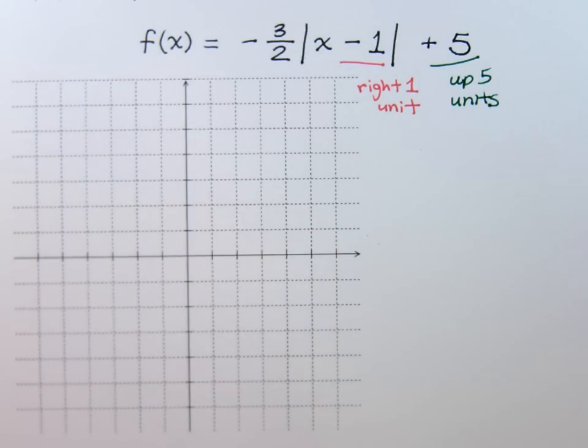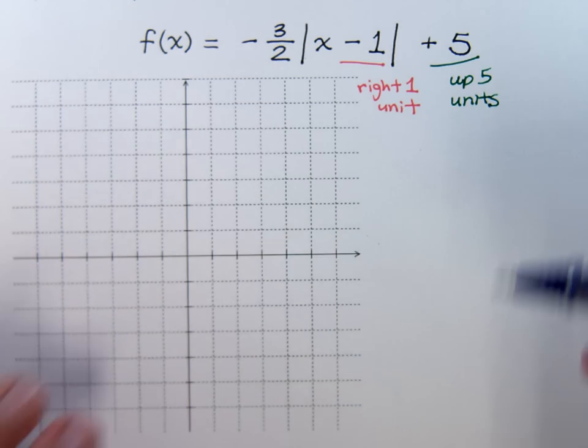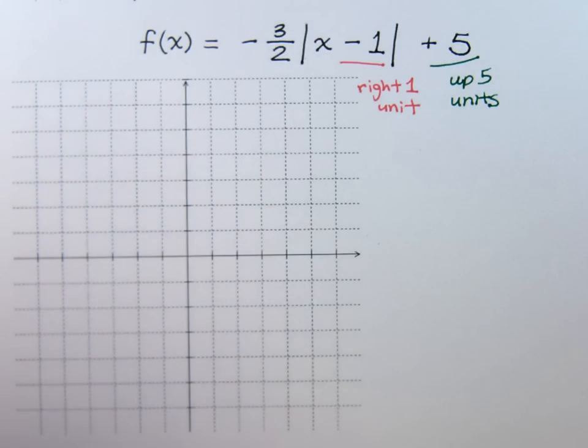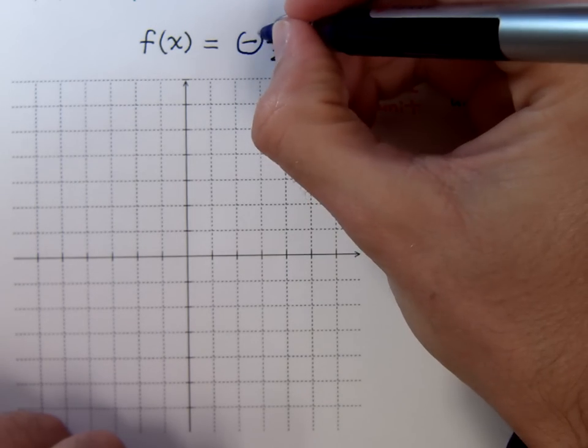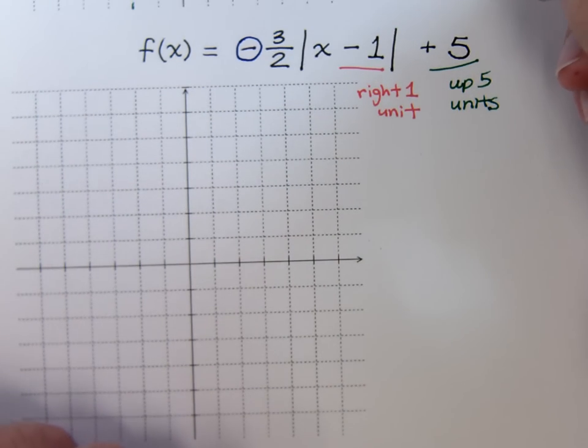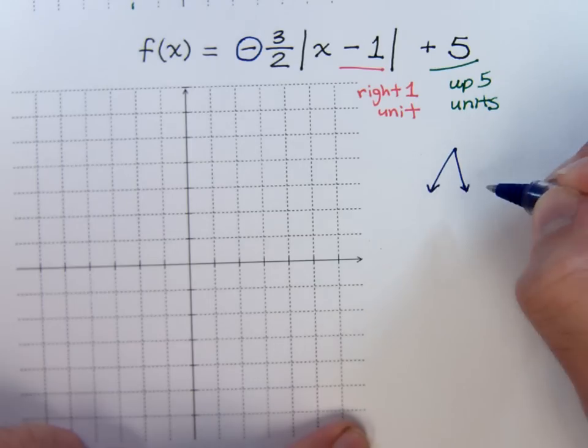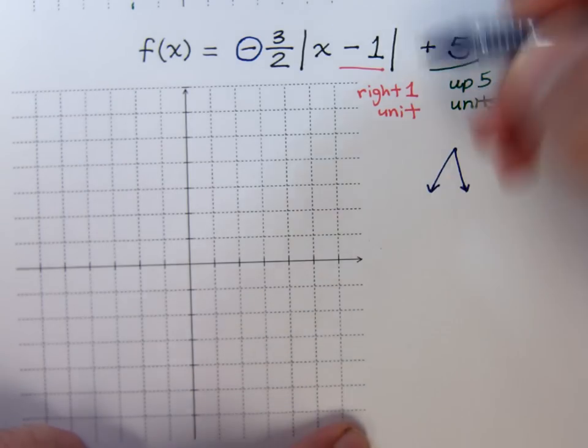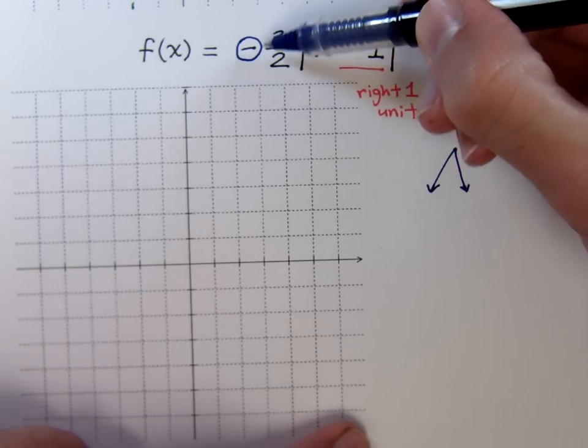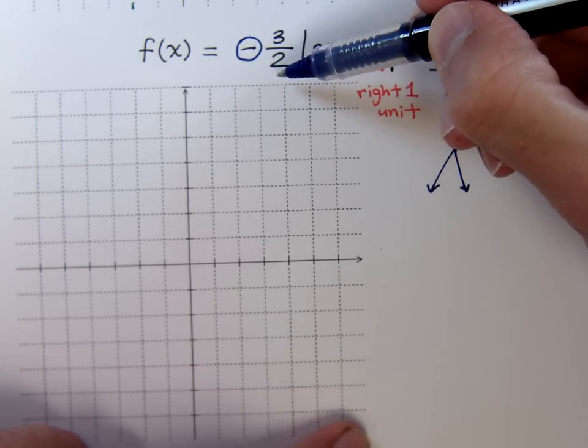And then we have to figure out what we're going to do with that coefficient in the front. The negative here means I'm going to go upside down. So I know that my shape is going to be opening down.